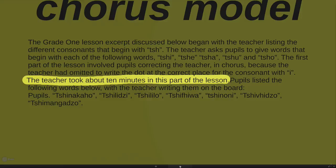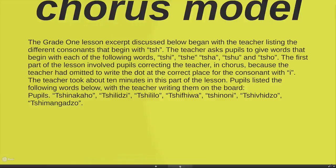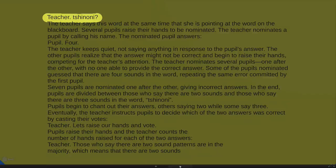The teacher took about 10 minutes in this part of the lesson, so you can hear it's going very slowly and the demand is actually very low. Pupils listed words with the teacher writing them on the board. What's really interesting is what happens next — the teacher tries to work with the learners on how many sounds are being made when you say the words, going through a number of words until she gets to the word 'chinoni'.